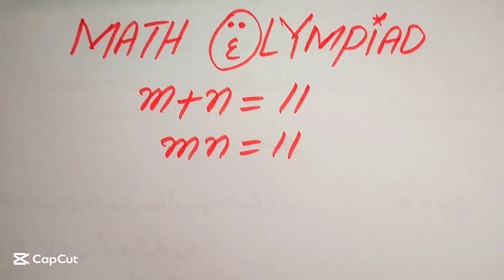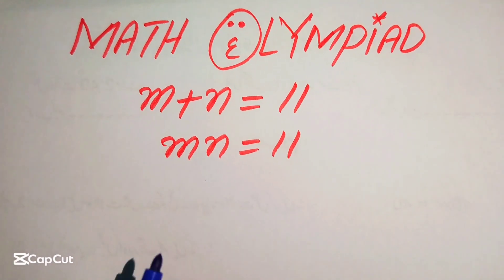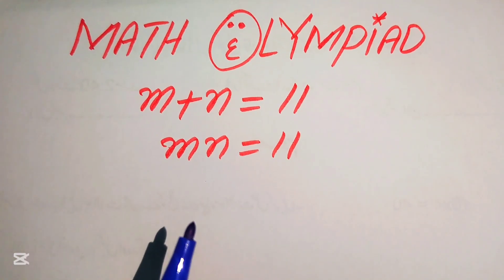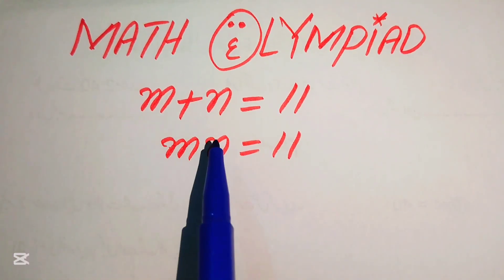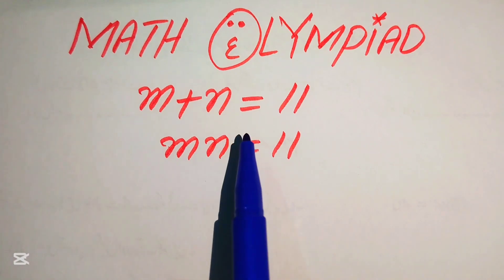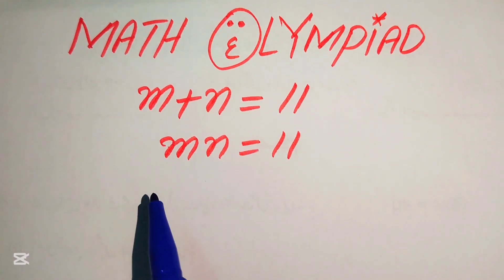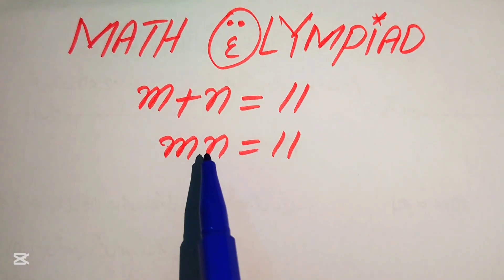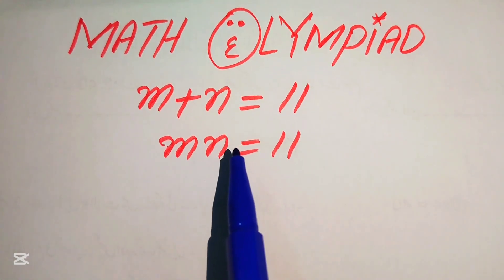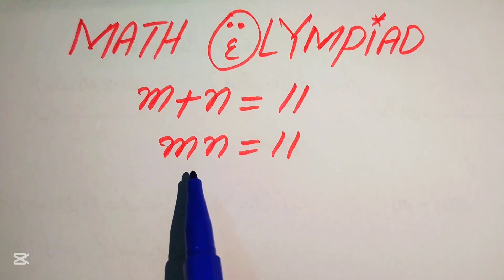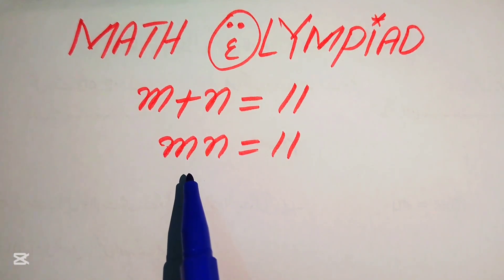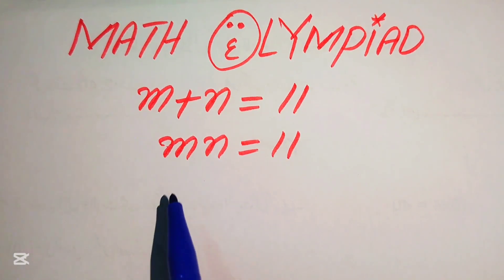Hello everyone, welcome to solve this nice math olympiad algebra problem. Here we have m plus n equals 11 and m times n equals 11, and we solve this problem for the values of m and n.